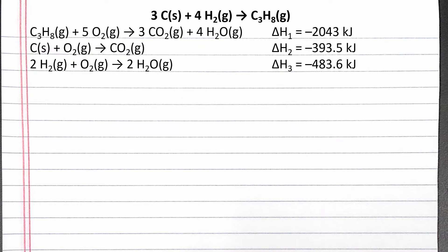To do this, we will look for substances in the overall reaction that only show up in one of the given reactions. If a substance in the overall reaction shows up in more than one of the given reactions, we can initially skip it.